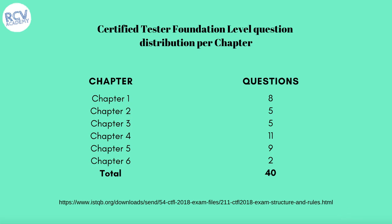The distribution of questions per chapter shows there are six sections in the ISTQB foundation level. The maximum number of questions come from chapters 4 and 5, making these two chapters very important, followed by chapter 1, then chapters 2 and 3. Chapter 6 has the lowest number of questions, so please go through chapters 4 and 5 thoroughly, then chapter 2 and 3, followed by chapter 6.